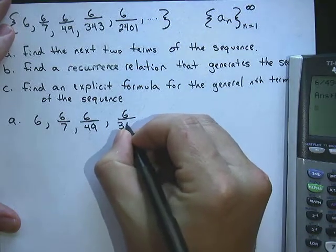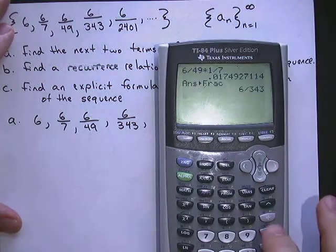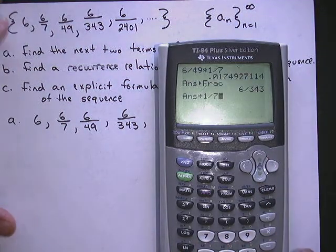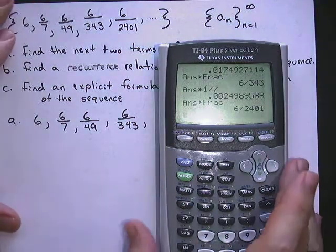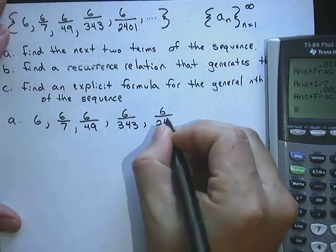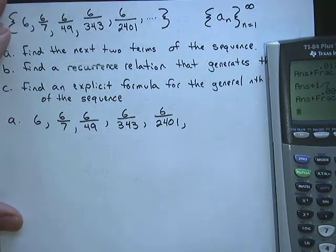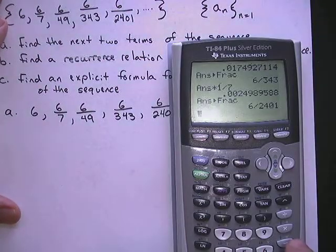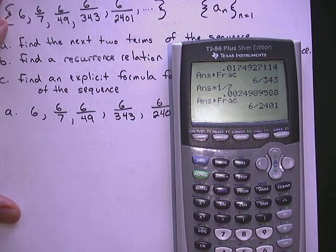So it looks like our pattern works. Let's keep going and multiply that by 1 over 7. I get 6 over 2401. So in order to find the next two of the sequence, I just need to multiply it by 1 over 7 again, or you could divide by 7 if you wanted.